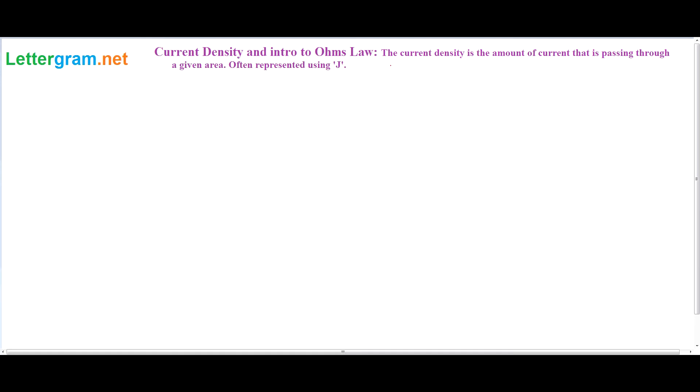Current density is defined as the amount of current that is passing through a given area, often represented with J. The J isn't a regular J, it's kind of like that, so whatever.